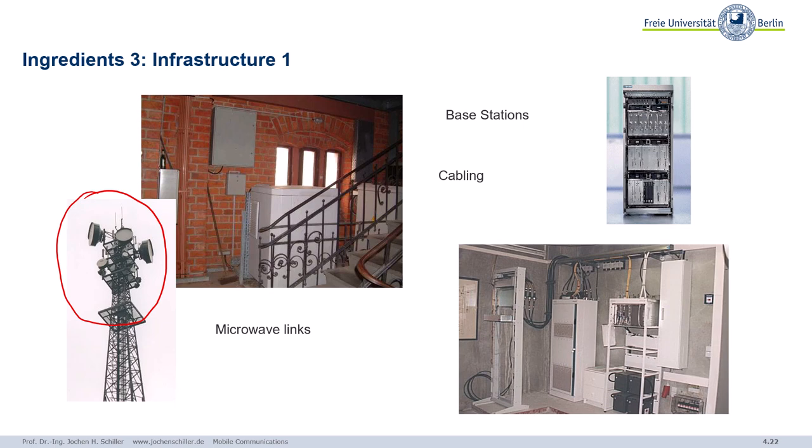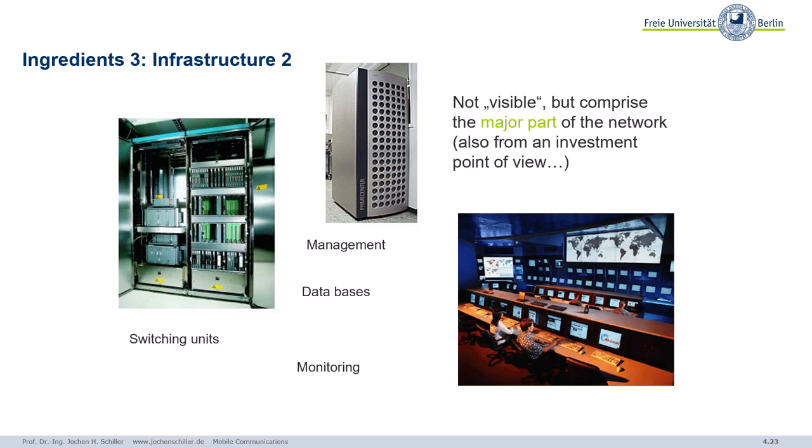Inside those buildings you have a lot of systems, a lot of hardware, power supplies and batteries. You might have different microwave links to connect those different sites, a lot of cabling, etc. Besides those systems, we need additionally more infrastructure: switching units, really powerful databases, management units, monitoring systems, etc. Those systems are not really visible, but altogether these infrastructure components — all the cabling, all the antennas — comprise the major part of the network and are also the expensive part. A rollout in a whole country of a new mobile phone system costs several billions of dollars or euros.